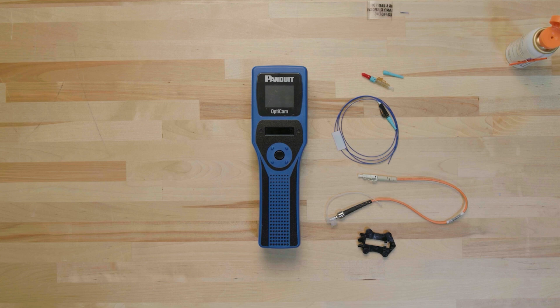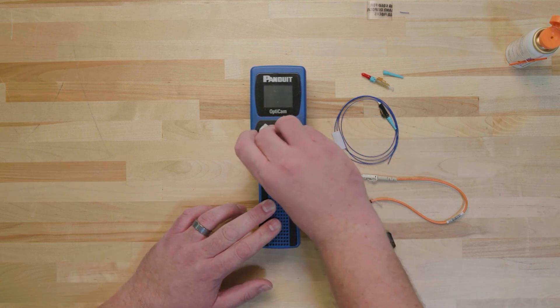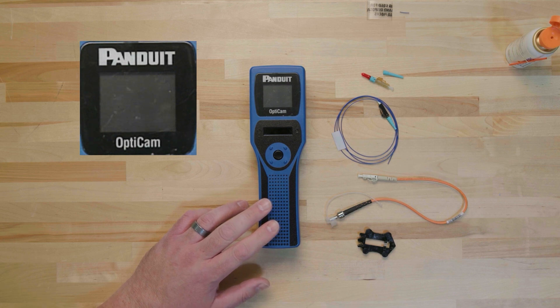The first step is to clean and set up the OptiCam II tool. Wipe all dust and particles off the aperture window using a dry, lint-free cloth. Once the tool is clean, we need to make sure the settings on the tool match your connector and desired setup.